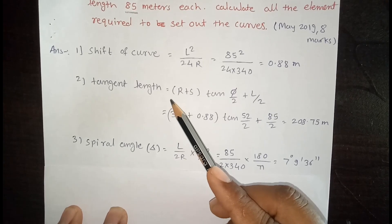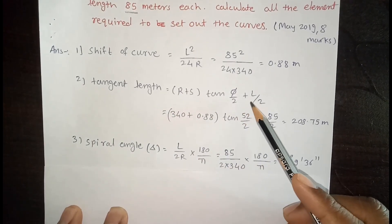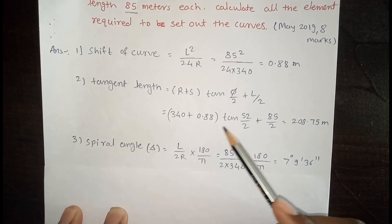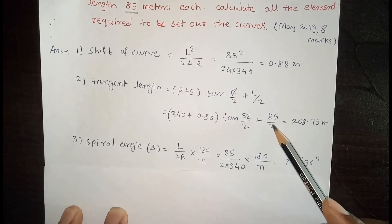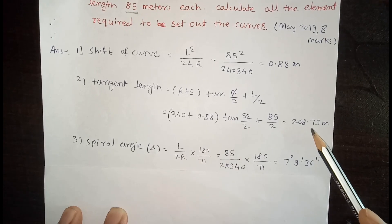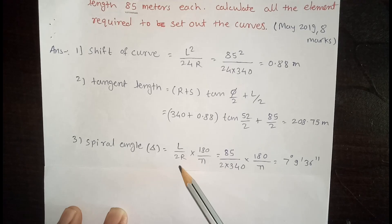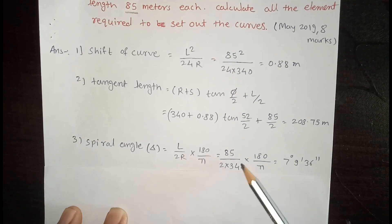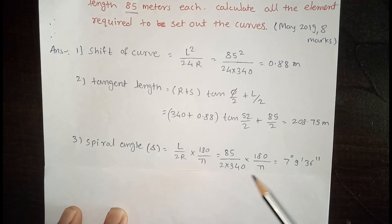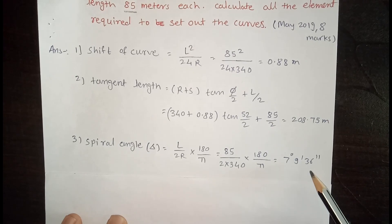Tangent length formula is: T = (R + S) × tan(φ/2) + L/2, where L is the length of the transition curve. So the tangent length is 208.75 meters. The spiral angle formula is: δ = L / (2R) × (180/π). With L = 85 and R = 340, the spiral angle is 7° 9' 36".